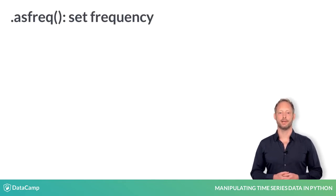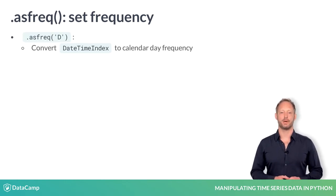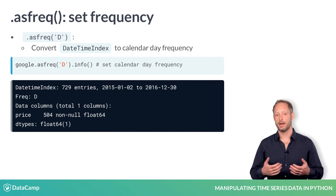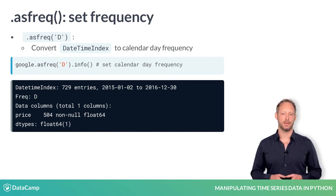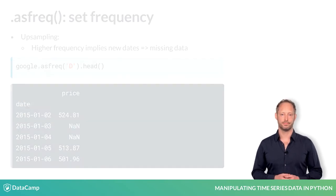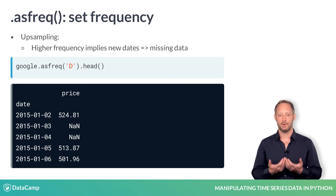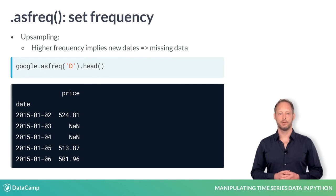You may have noticed that our DateTime index did not have frequency information. You can set the frequency information using asfreq. The alias D stands for calendar day frequency. As a result, the DateTime index now contains many dates where stock wasn't bought or sold, and these new dates have missing values. This is also called upsampling because the new DataFrame is of higher frequency than the original. In the next chapter, you will learn how to create data points for those missing values.